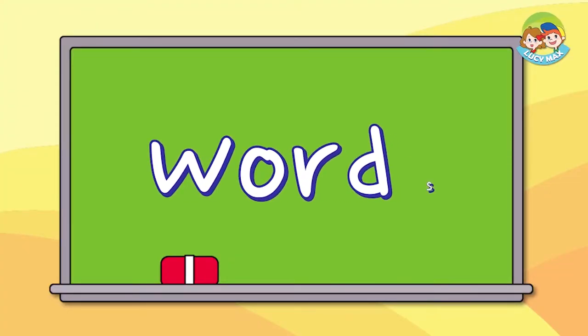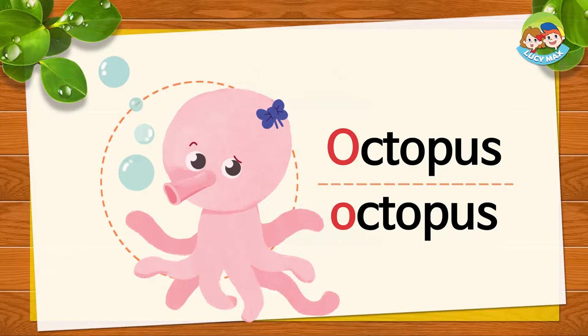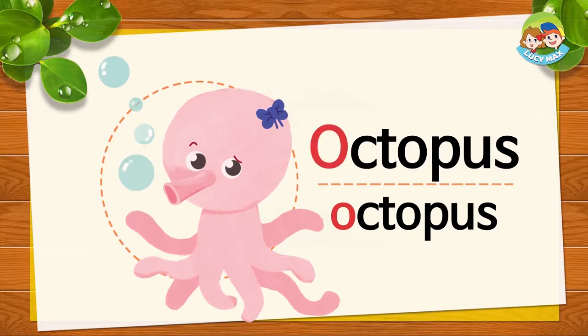That's right! What begins with the letter O, the 'aw' sound? Look at some pictures that begin with the 'aw' sound. What is this? It's an octopus. Octopus begins with the letter O — 'aw' sound. Aw, aw, octopus. Repeat after me: aw, aw, octopus.